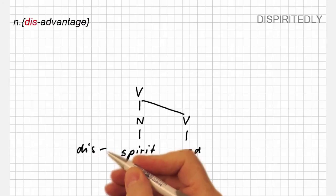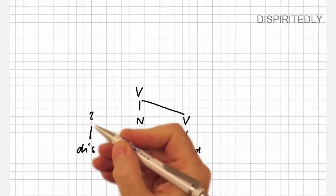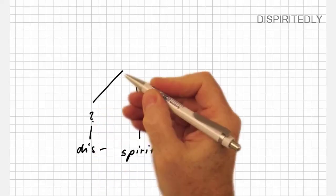to nouns as in disadvantage, to verbs as in display, and to adjectives such as dishonest. So we label it with a question mark and dispirited remains a verb.